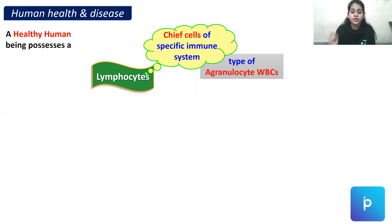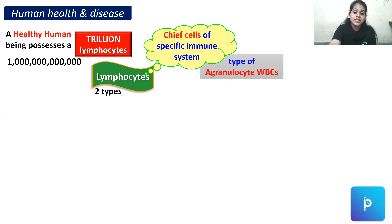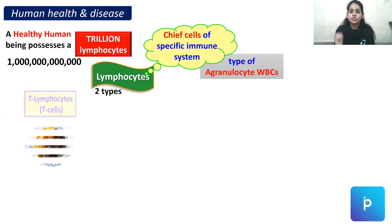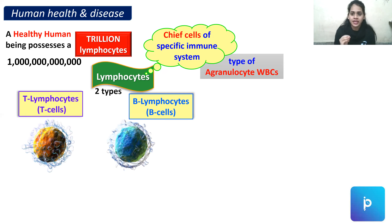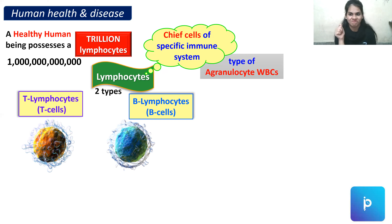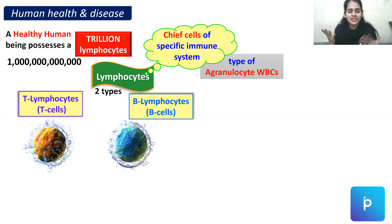A healthy person usually possesses around trillions of lymphocytes. There are two major types: T lymphocytes and B lymphocytes. The T stands for thymus — T lymphocytes mature in the thymus gland — and B stands for bone marrow — B lymphocytes mature in the bone marrow.